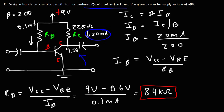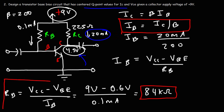To summarize: step one is to set VCE to half of VCC. Step two is to determine the IC value you want and calculate the appropriate RC. Once you have RC, calculate IB, and then calculate RB using the base current formula. Now you know how to draw the DC load line, determine centered Q-point values, and design a transistor base bias circuit. Thanks for watching.